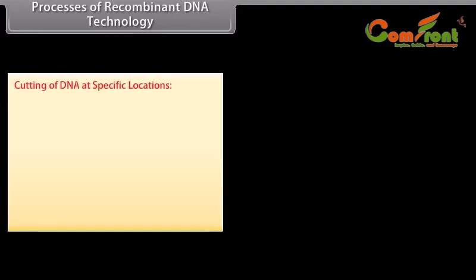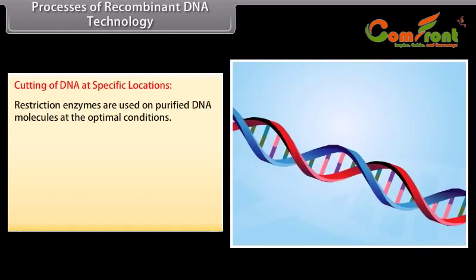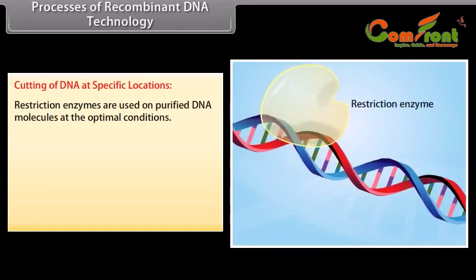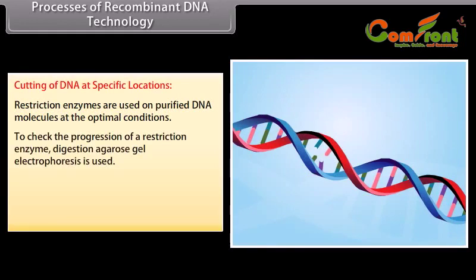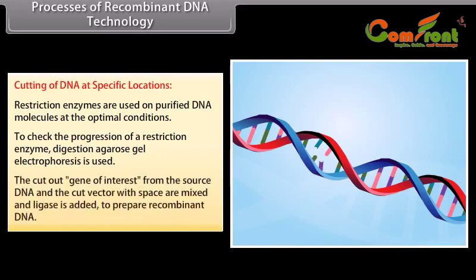Cutting of DNA at specific locations. Restriction enzymes are used on purified DNA molecules under optimal conditions. To check the progression of restriction enzyme digestion, agarose gel electrophoresis is used. The cut-out gene of interest from the source DNA and the cut vector with space are mixed, and ligase is added to prepare recombinant DNA.